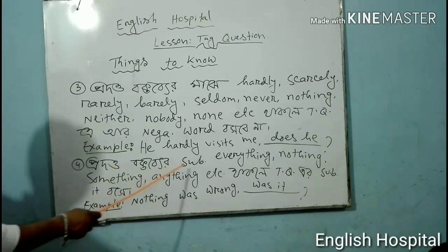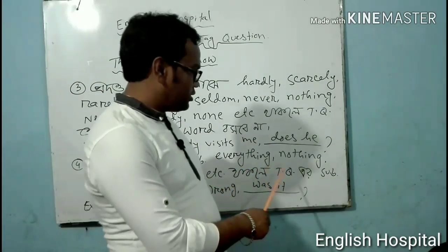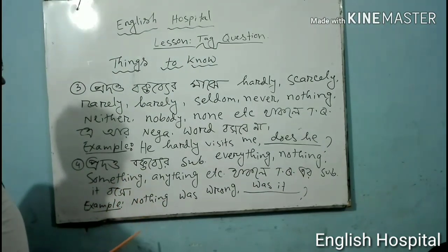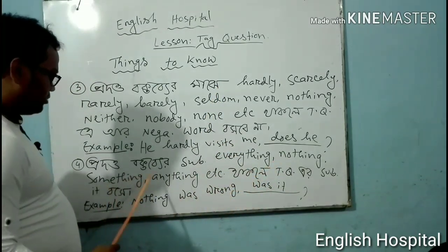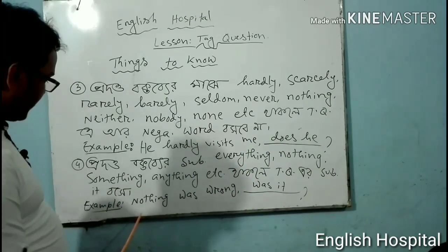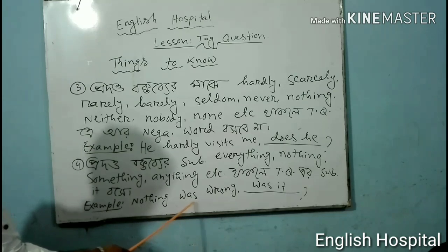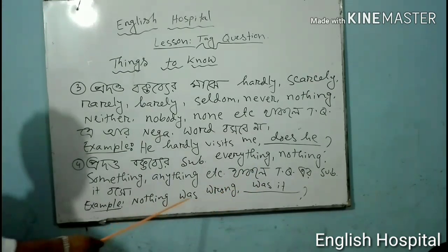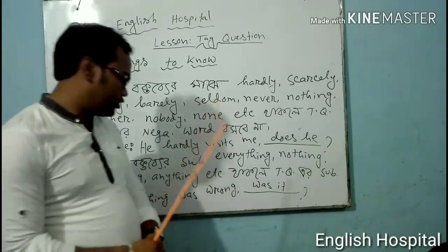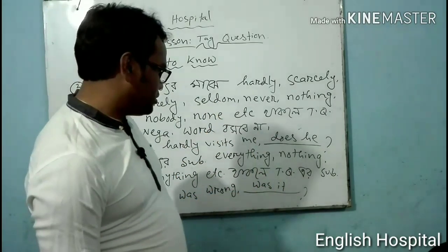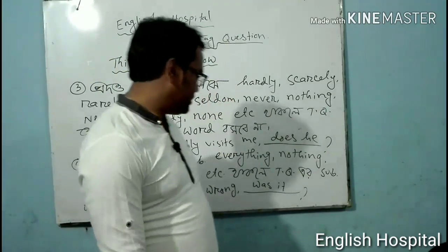Number four: if the subject is everything, nothing, something, or anything, the pronoun in the tag question is 'it'. For example: 'Nothing was wrong.' Nothing is the subject. Since 'nothing' is a negative word, the tag question is affirmative, and the subject pronoun used is 'it' — so the tag is 'was it?'